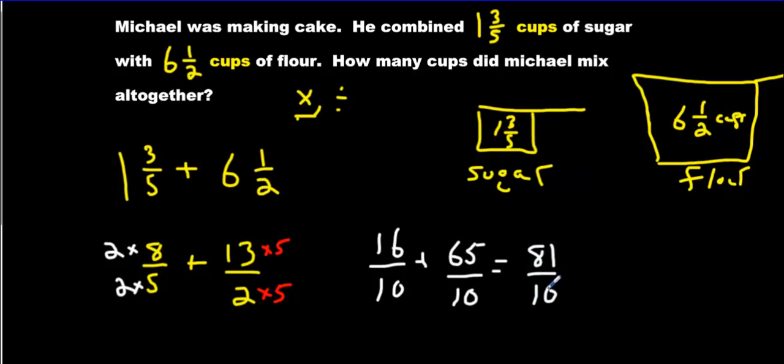Oh my gosh, these numbers are getting big. Now just turn it back. If you can reduce it, reduce it. We can't do that here. We'll just break it down. We're just going to go 8 because 10 goes into 81 8 times. And you're going to get what left over? 1 left over. All together, we have 8 and 1 tenth of a cup.